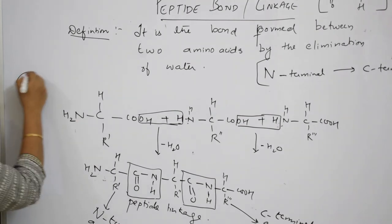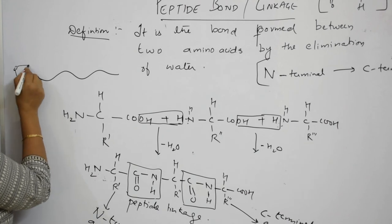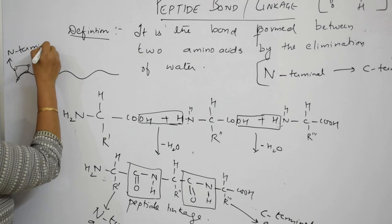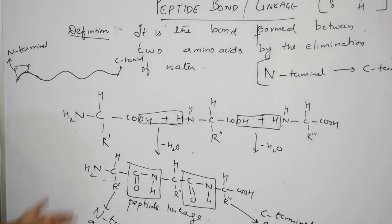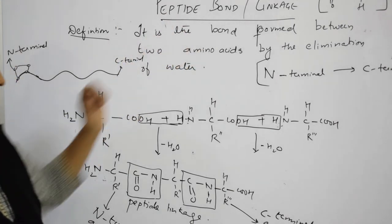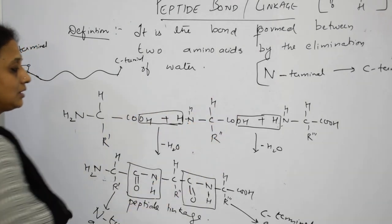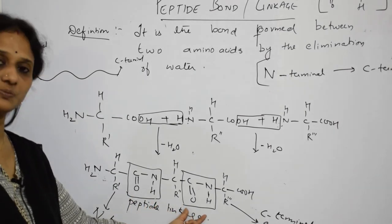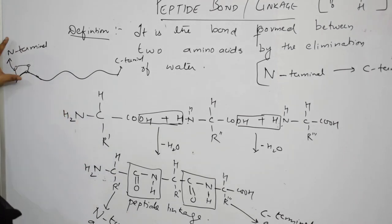If amino acids link together one after the other, the first amino acid will be the N-terminal and the last will be the C-terminal. To write a peptide bond in your exam: take two amino acids, eliminate a water molecule on each side, show the peptide bond, and importantly show the direction from N-terminal to C-terminal. It starts with N-terminal and ends with C-terminal — this is your peptide.